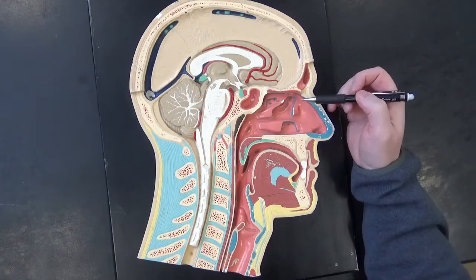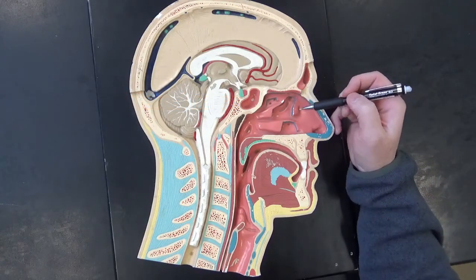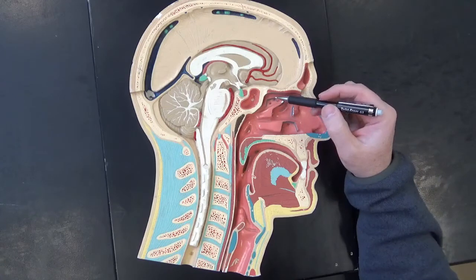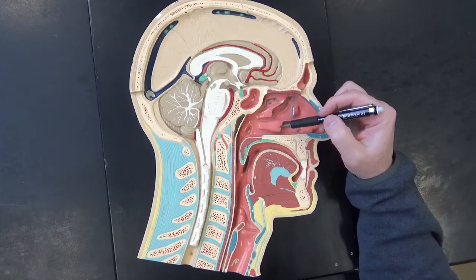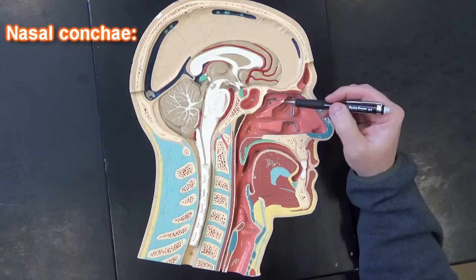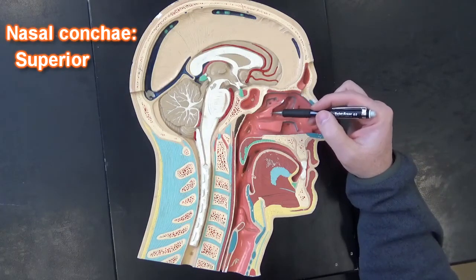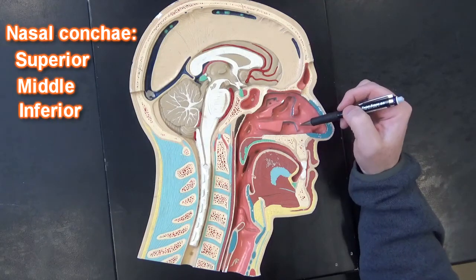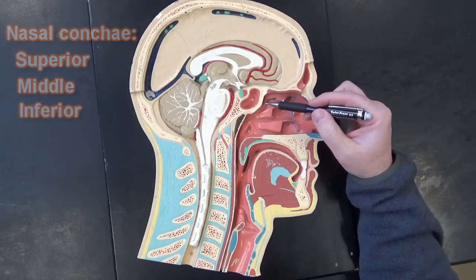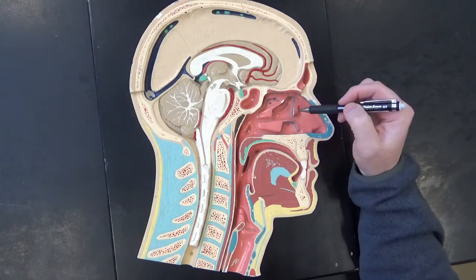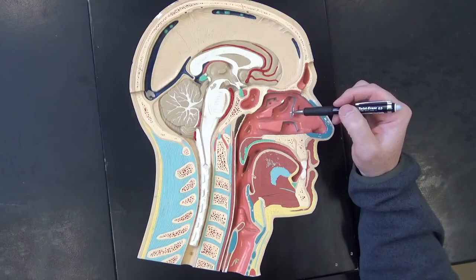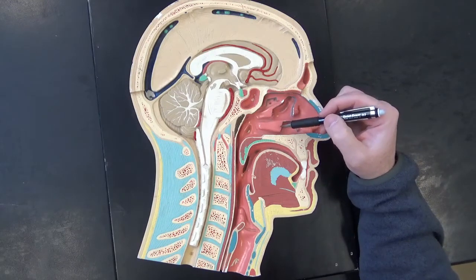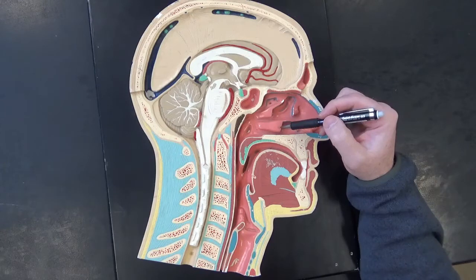In the nasal cavity, we've got three concha: superior concha, middle concha, and then inferior concha. The superior and middle nasal concha are part of the ethmoid bone, and then the inferior nasal concha is a separate bone in and of itself.